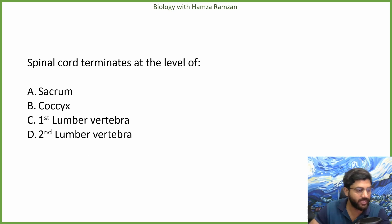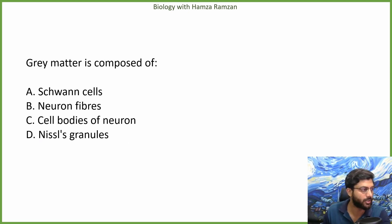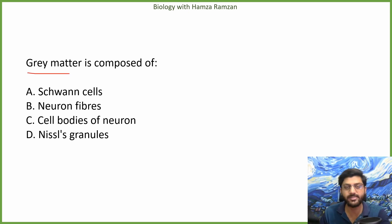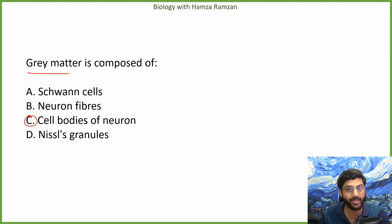The important MCQ is that the spinal cord terminates at the second lumbar vertebra (L2) — it is not the first lumbar. Grey matter is composed of cell bodies, and white matter is composed of myelinated neurons or myelinated axons.